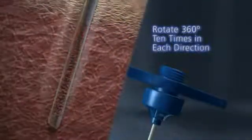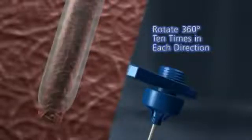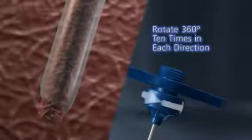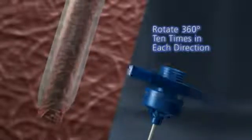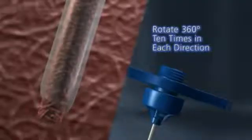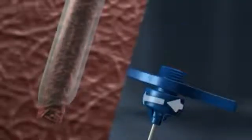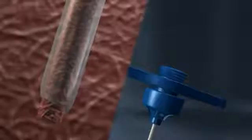rotate the needle 360 degrees ten times to the left and ten times to the right, using a quick motion and light downward pressure to allow the taper tip to help sever the specimen. Slowly remove the needle and specimen with the same clockwise-counterclockwise motion.